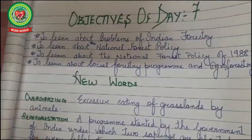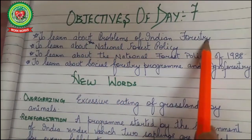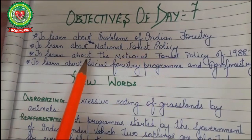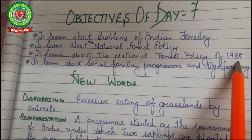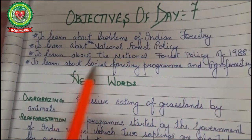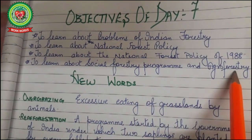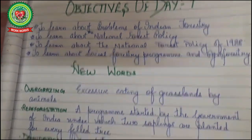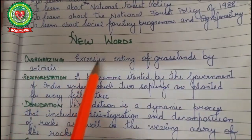Today we will be learning about the problems of Indian forestry, the national forest policy, the national forest policy of 1988, social forestry program, and agroforestry. While going through these topics we will also be learning some new words. Overgrazing means excessive eating of grassland by animals.